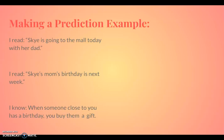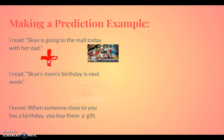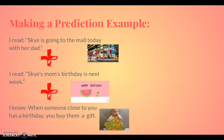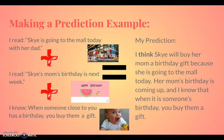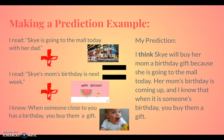Let's look at an example of making a prediction. Skye is going to the mall today with her dad, and I read that Skye's mom's birthday is next week. I know that when someone close to you has a birthday, you buy them a gift. When we add those together, my prediction is that I think Skye will buy her mom a birthday gift because she is going to the mall today and her mom's birthday is coming up, and I know that when it is someone's birthday, you buy them a gift.